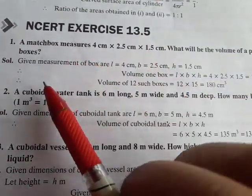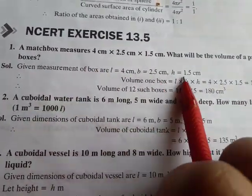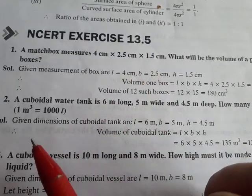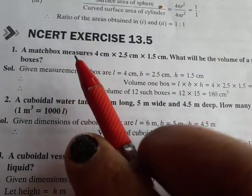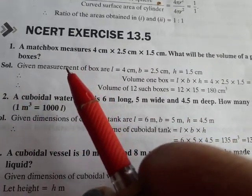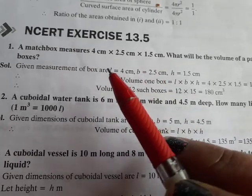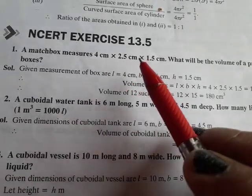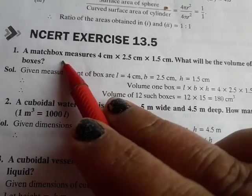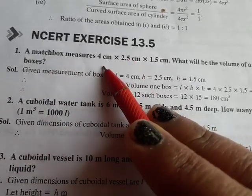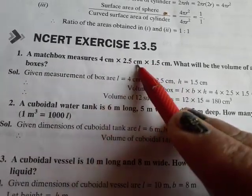Now Exercise 13.5. In this exercise, you have to find the volumes of cubes and cuboids. Cubes and cuboids have the same faces, same edges, same vertices, but a cuboid's length, breadth, and height are different, while a cube's length, breadth, and height are the same. Now you have a matchbox, a matchbox which has dimensions of length, breadth, and height given.